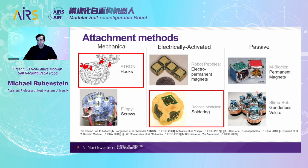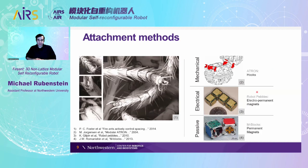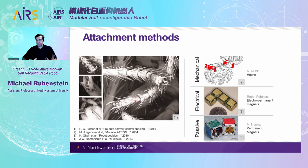I want to look at how to build an attachment method that has all the advantages of these systems with fewer disadvantages — something that's very strong, easy to control, and allows you to attach anywhere on your neighbor's surface. This is inspired from nature: if you look at how ants attach to each other, they're not attaching in particular lattices. They're grabbing onto each other with their arms in any position and orientation, sometimes biting. So there's a lot of diversity in how they attach, and we want to build a robotic system that can do the same thing.